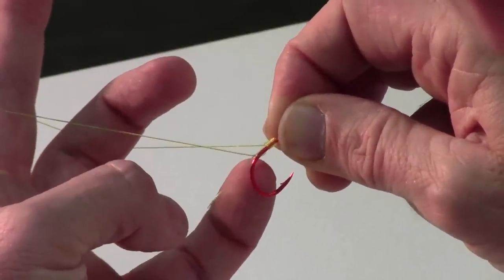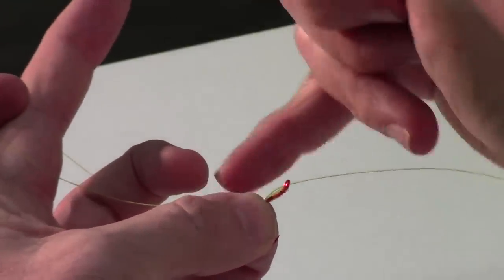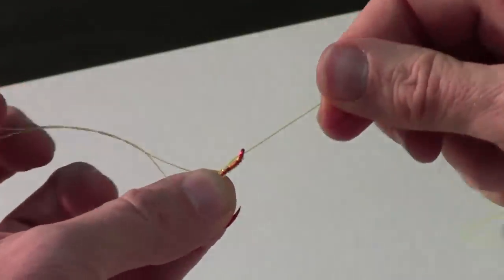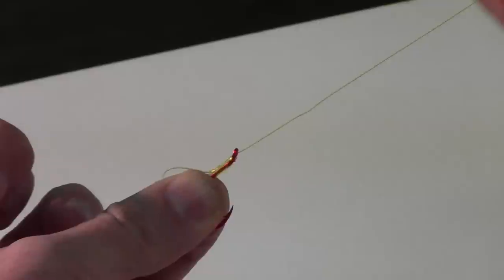Now you see how that's looped over on itself like that? Now I'm going to take and hold these ends of the loop and I'm going to take my right hand and pull this line through. Now it's a little twisty but as you go through it's going to come through on itself.